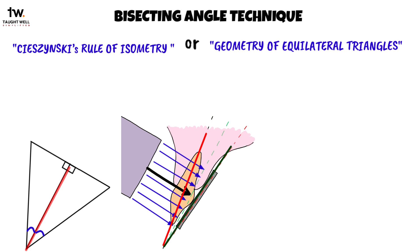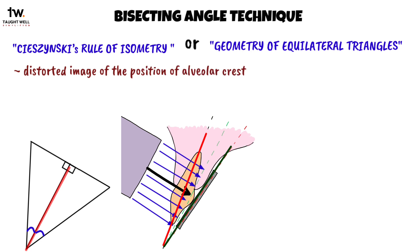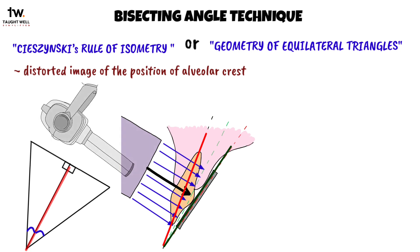However, when the image receptor is in this position, it is not parallel to the long axis of the teeth. This arrangement inherently causes distortion. Although the projected length of a tooth is correct, these images display a distorted image of the position of the alveolar crest with respect to the cementoenamel junction of a tooth. Another important point to remember about this technique is the exact vertical angulation for each arch and type of tooth.